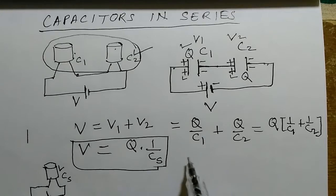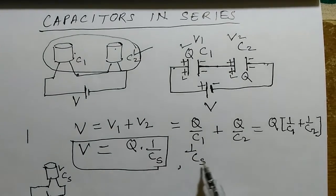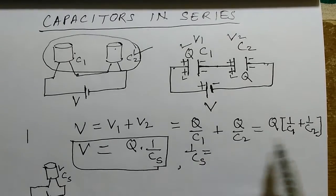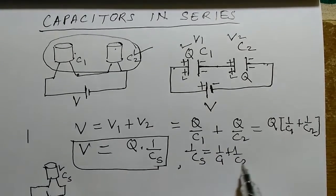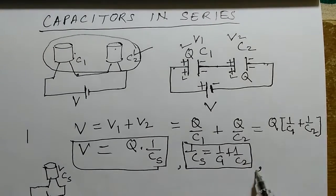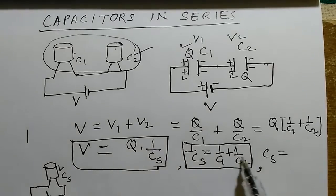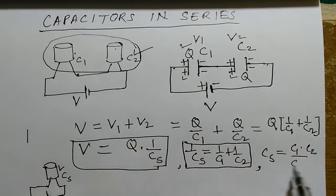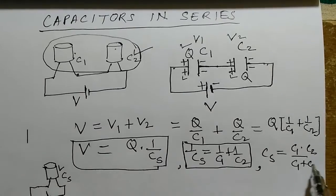Here, Cs will be calculated as 1 by Cs equals 1 by C1 plus 1 by C2. For two capacitors, Cs will be C1 times C2 divided by C1 plus C2.